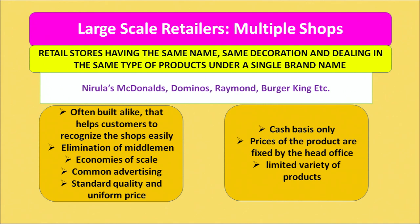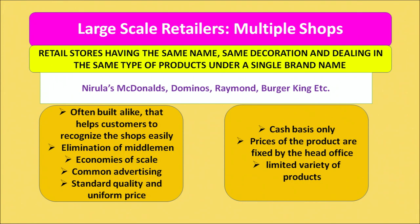Next, multiple shops are retail stores having the same name, same decoration, and dealing in the same products under a single brand name — for example, McDonald's, Domino's, Raymond, and Burger King. These shops are built on similar guidelines for easy consumer recognition. They provide cheaper products by eliminating middlemen and offer standard quality at uniform prices. However, they sell only on cash basis, and prices are fixed by the head office, leaving individual shops with no control over pricing.